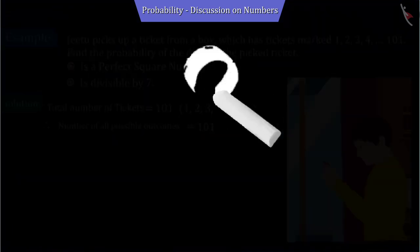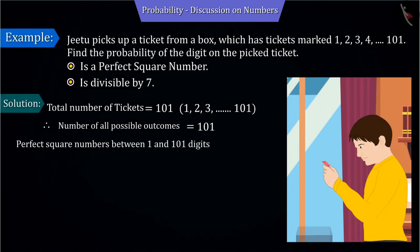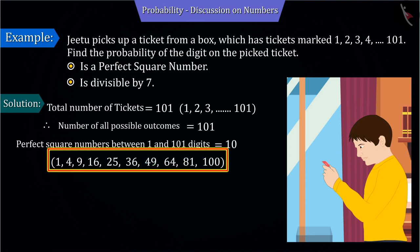We have to find the probability of getting a perfect square number on the ticket. Between the given numbers 1 to 101, there are a total of 10 perfect square numbers: 1, 4, 9, 16, 25, 36, 49, 64, 81, and 100.